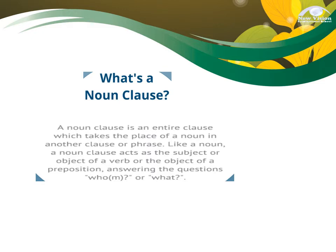Now, what is a Noun Clause? A Noun Clause is a dependent clause — an entire clause which takes the place of a noun in another clause or phrase. Like a noun, a Noun Clause acts as the subject or object of a verb, or the object of a preposition, answering the questions whom, who, or what.